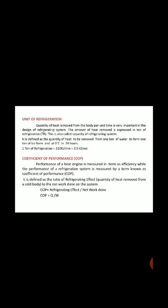Unit of Refrigeration. The quantity of heat removed from the body per unit time is very important in the design of a refrigeration system. The amount of heat removed is expressed in terms of refrigeration and is also called the capacity of the refrigeration system. It is defined as the quantity of heat to be removed from one ton of water to form one ton of ice from and at zero degrees centigrade in a day per hour. 1 ton of refrigeration is equal to 210 kJ per minute, which is also equal to 3.5 kJ per second.